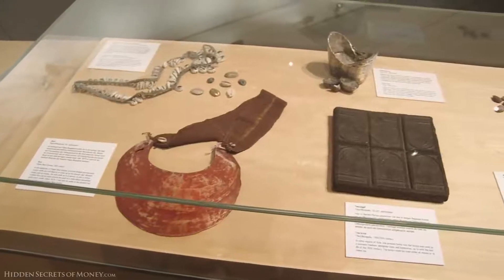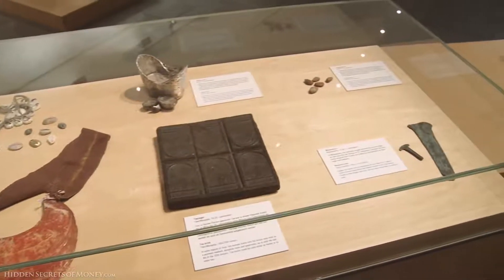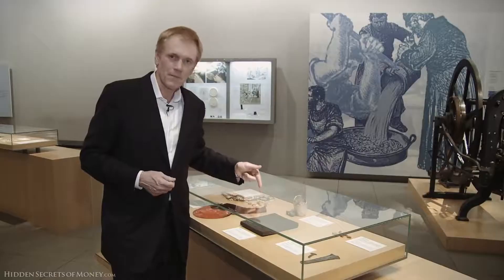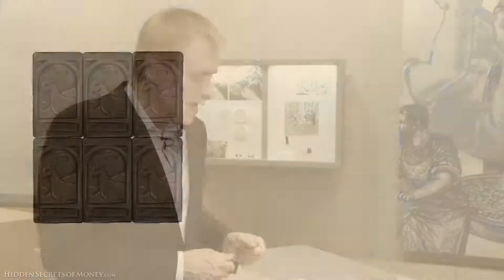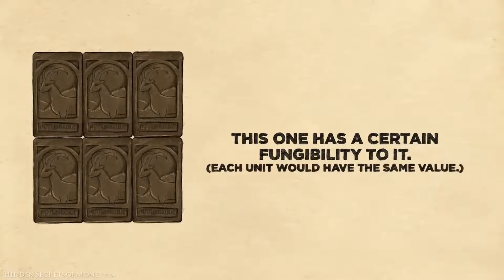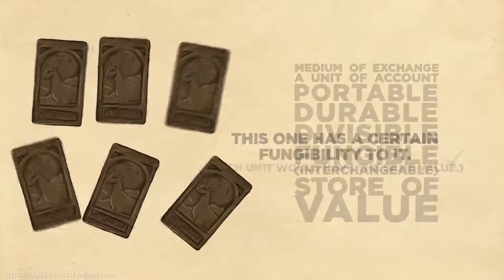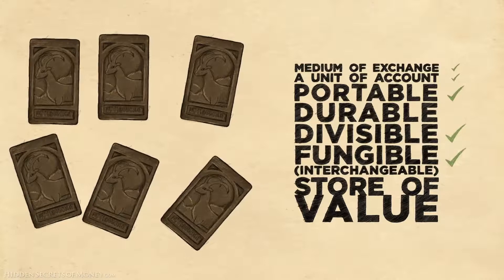Some of these were widely used right up until the beginning of the 20th century. Here's something very interesting — this brick of tea. Its value is in the intrinsic commodity: the tea itself. But it has a certain fungibility; each unit has the same value and you can make change — you can snap these things apart into units of six. It's portable, it's not that heavy. This fulfills quite a few of the functions of money, though I wouldn't imagine it's very durable.